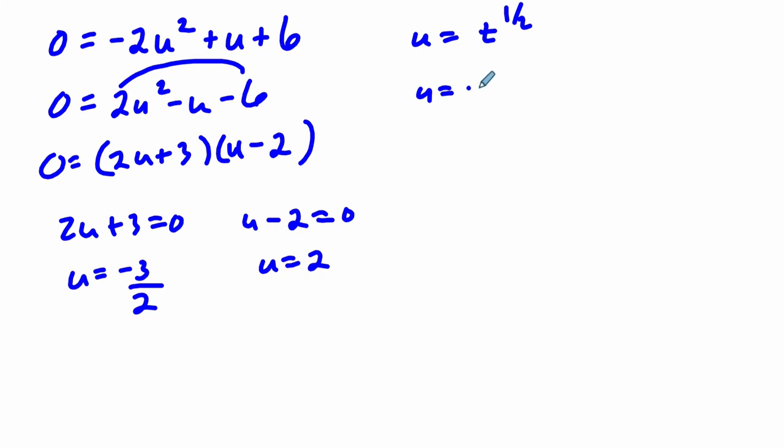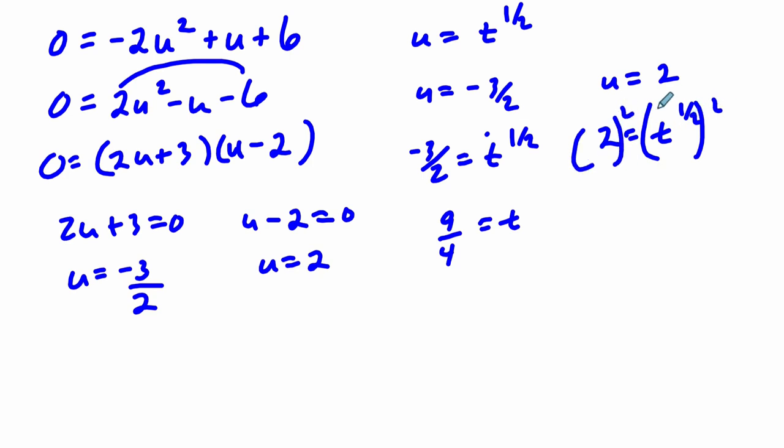So if U equals negative 3 halves, we try to find T by squaring both sides. Negative 3 halves equals T to the 1 half. Solve for T, square both sides. So T would equal 9 fourths. In the other case, if U equals 2, that means T to the 1 half is 2. We square both sides. If you square both sides, 1 half times 2 is just 1. That's the law of exponents. And 2 squared is 4. So T is 4 and 9 fourths.